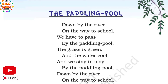Down by the river on the way to school. Once again children, I am explaining the poem to you. Niche river की तरफ school जाते समें, हमें pass होना पड़ता है, गुजरना पड़ता है paddling pool के pass से. वहाँ पर grass green है और water cool होता है. And we stay to play — और हम वहाँ रुक जाते हैं खेलने के लिए, paddling pool के pass.